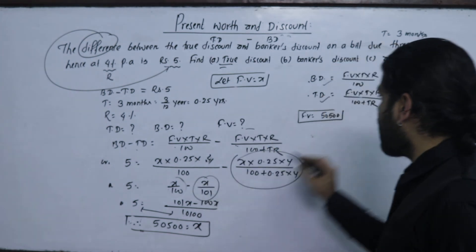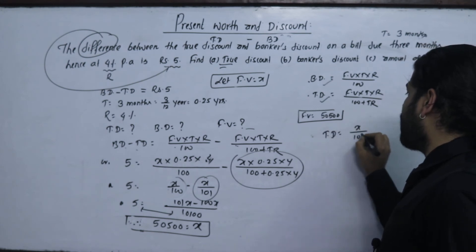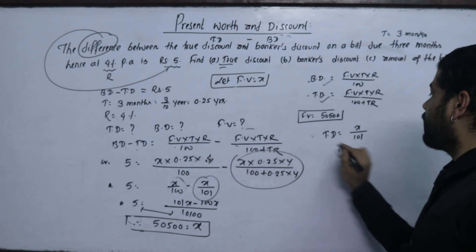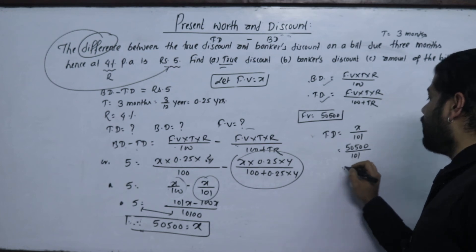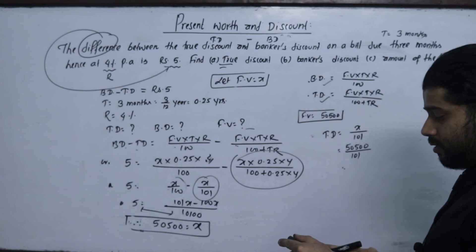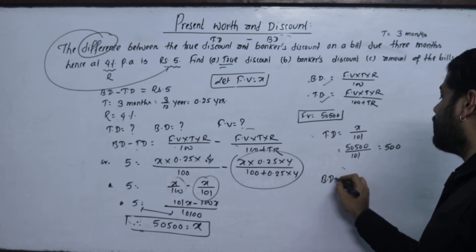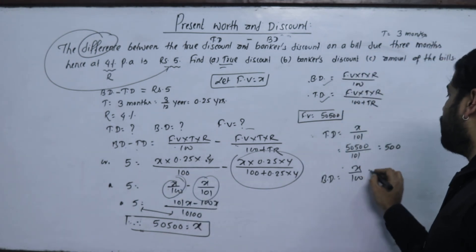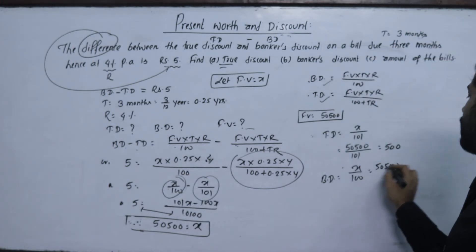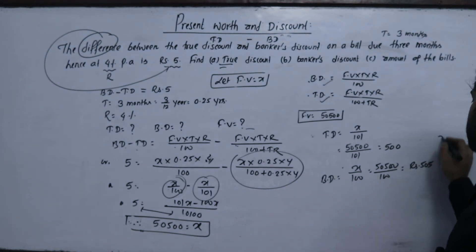The true discount TD equals x upon 101. With x equal to 5500, TD equals 5500 upon 101. This simplifies to 50500 upon 100.